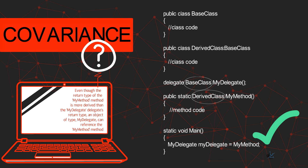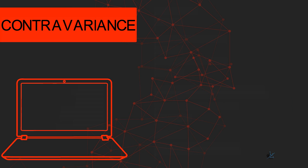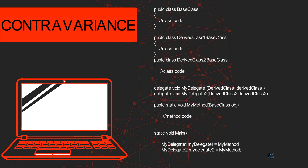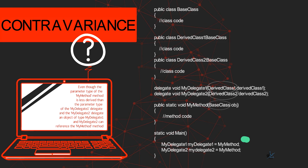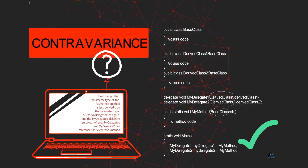Contravariance permits a method that has parameter types that are less derived than those in the relevant delegate's type. If you haven't yet subscribed, please consider subscribing and ring the bell so that you can be notified of content on advanced C# concepts and much more.